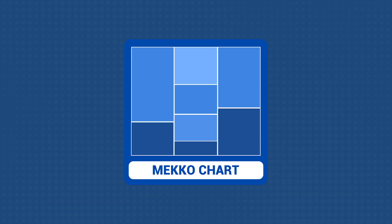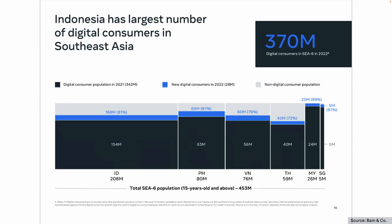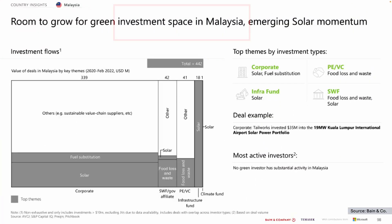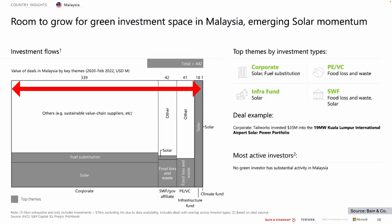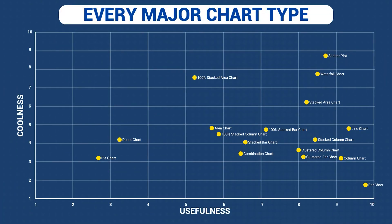This next chart looks complicated but can actually be incredibly useful, and that's the Mekko chart. You can think of a Mekko chart like a 100% stacked column chart but with an additional dimension — width. This allows you to rank along one dimension while still showing another, so it can help you answer multiple questions with a single visualization. For example, here you can see investment flows in Malaysia: the width shows the size of investments by type and then the height breaks it down by focus areas like solar and food waste, making it easy to compare both the biggest investors and where they're putting their money. My main advice for Mekko charts is to make sure they're easy to understand — clearly label what your axes mean and use colors and outlines to make the different subcategories distinct and easy to read. These are definitely cool looking but they can be confusing for audiences, so they're not always useful.